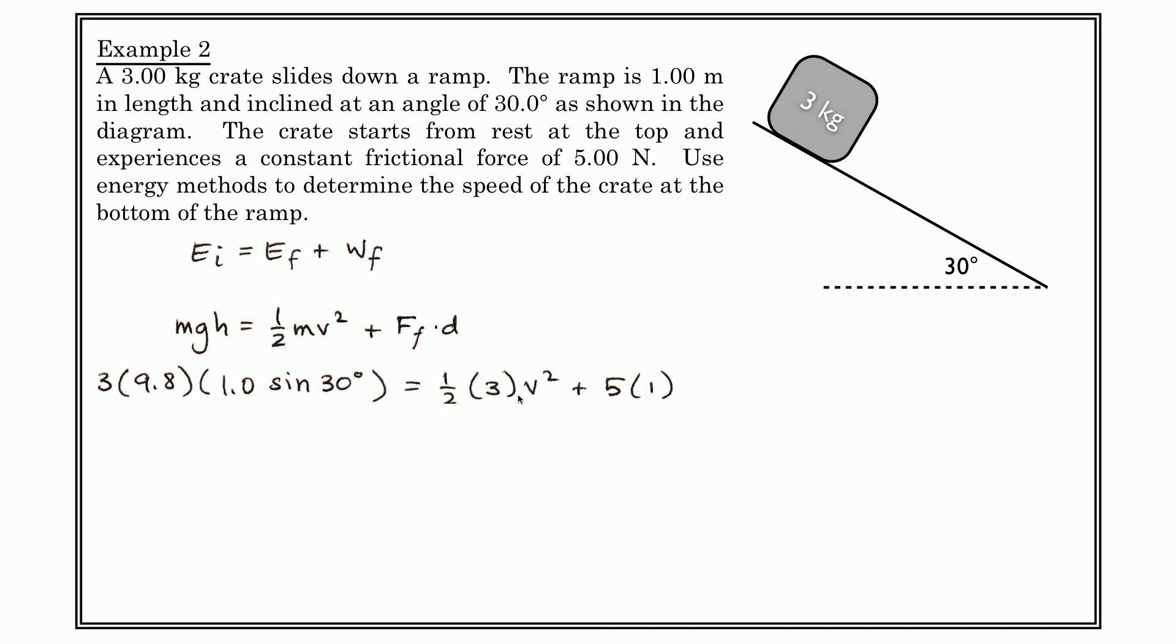Equals one half times three times V squared plus the force of friction multiplied by, or the dot product with, the displacement over which this crate rolls down the slide or slides down the slide. And of course, because the friction acts, the friction is five newtons, and because it acts over a displacement of one meter from here down to here, this is the work that's done by friction.